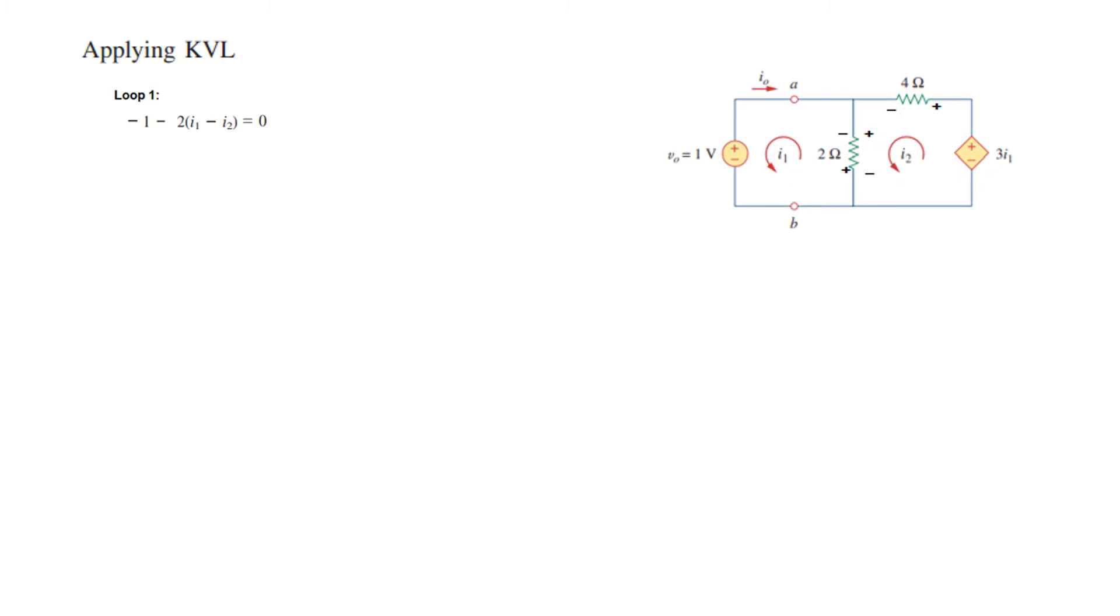Now we will write the KVL equation to find I₀, which is I₁ reversed. Loop 1 KVL: -1 - 2(I₁ - I₂), so 2I₁ - I₂ = -1/2, giving us I₁ - I₂ = -1/2. This is one equation from loop 1. Similarly we write the equation from loop 2.